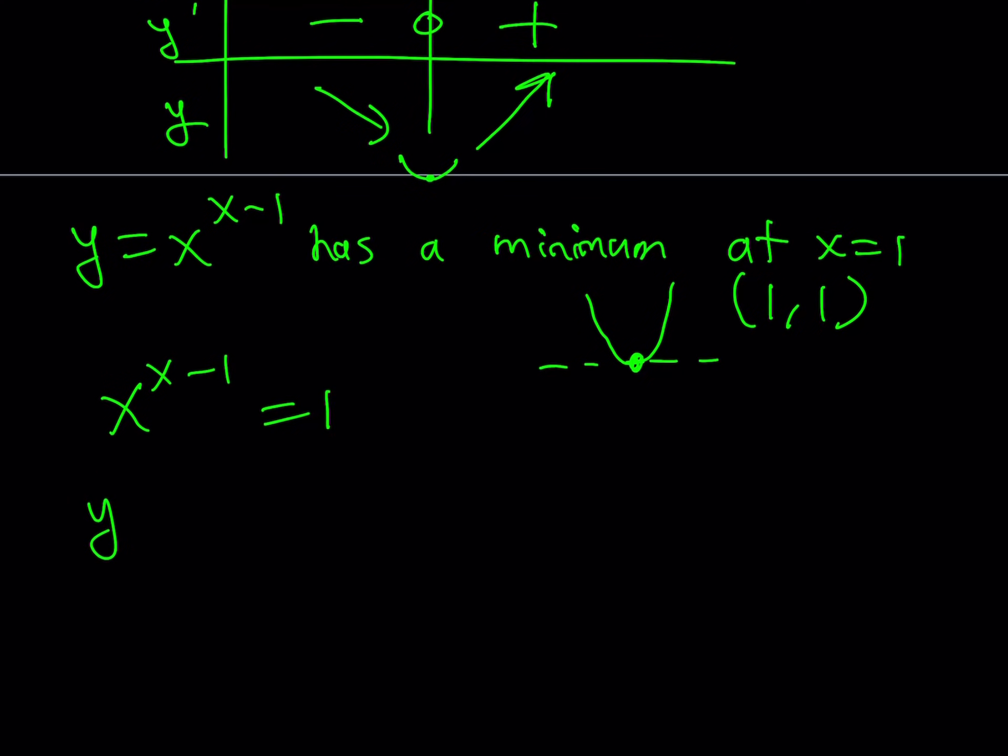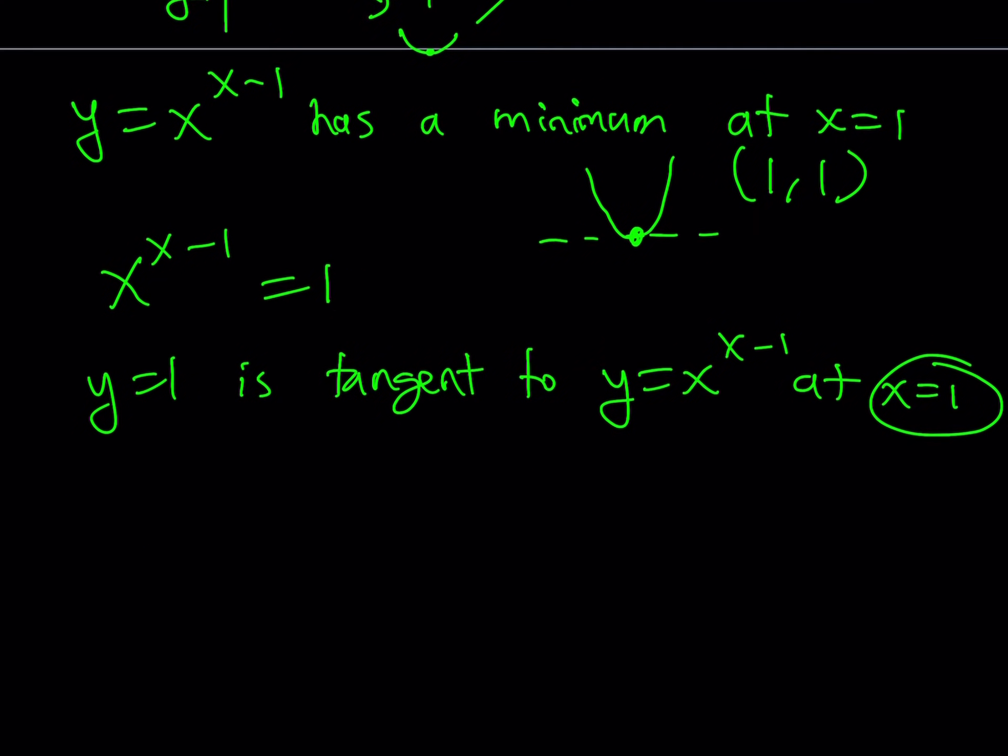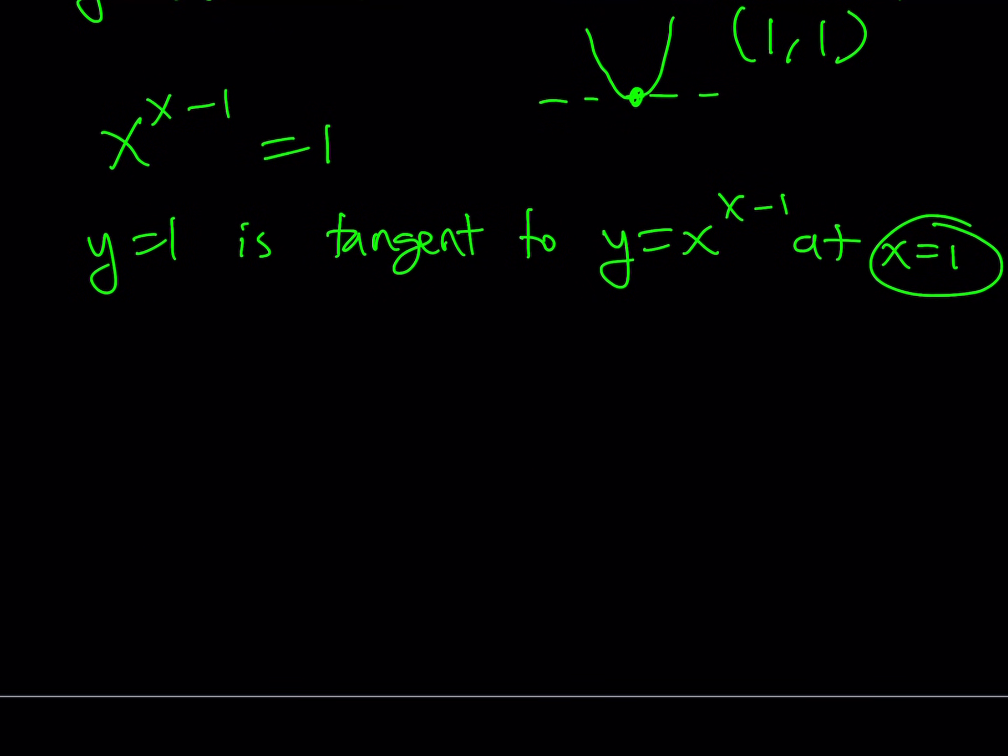Well, y equals 1 is obviously tangent to this function, x to the power x minus 1 at x equals 1. So that is going to be a solution because the two graphs intersect. They touch each other. That's going to be my first approach.